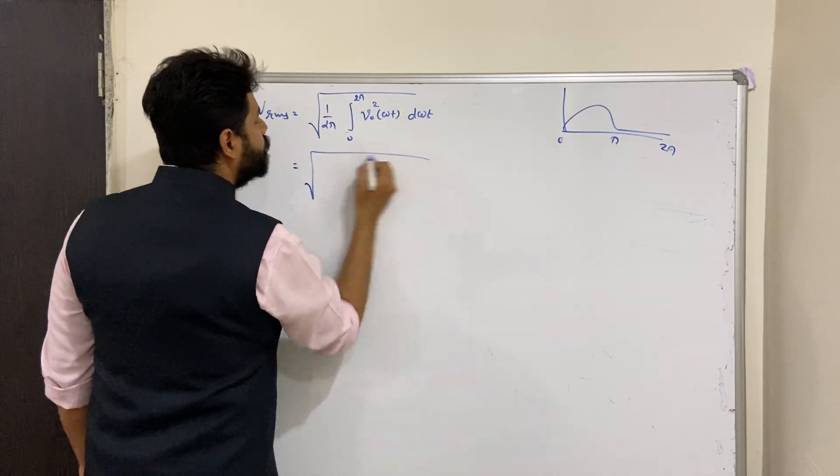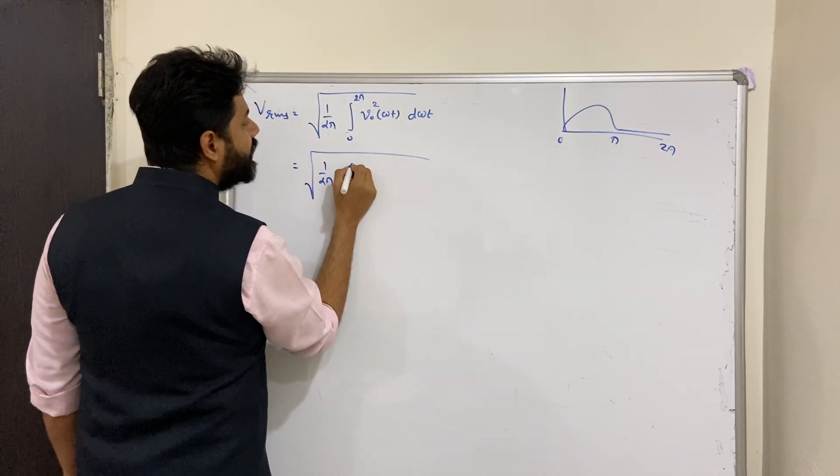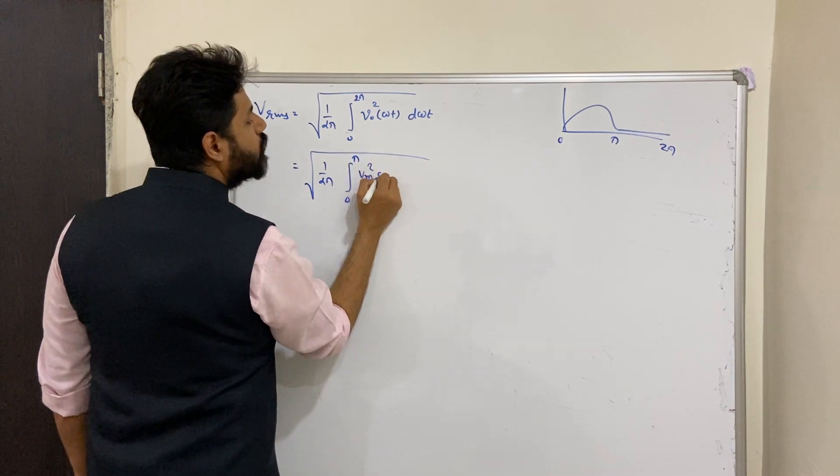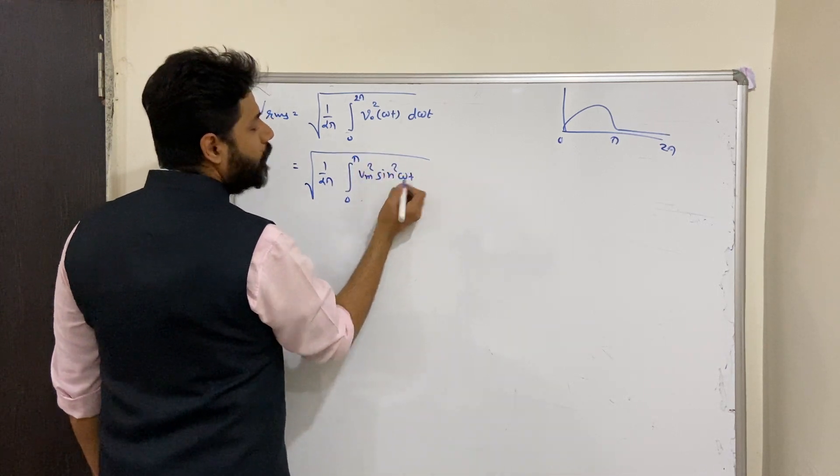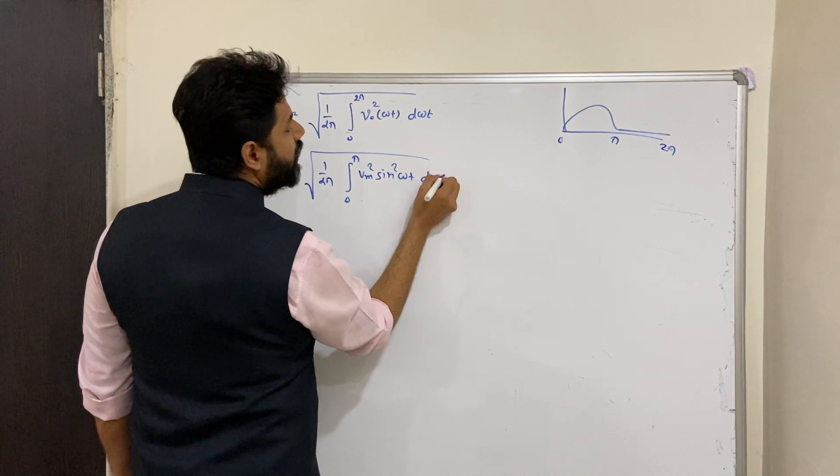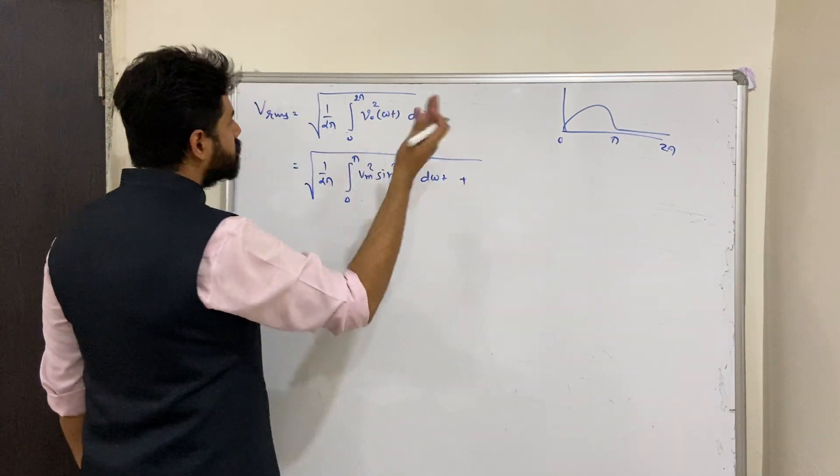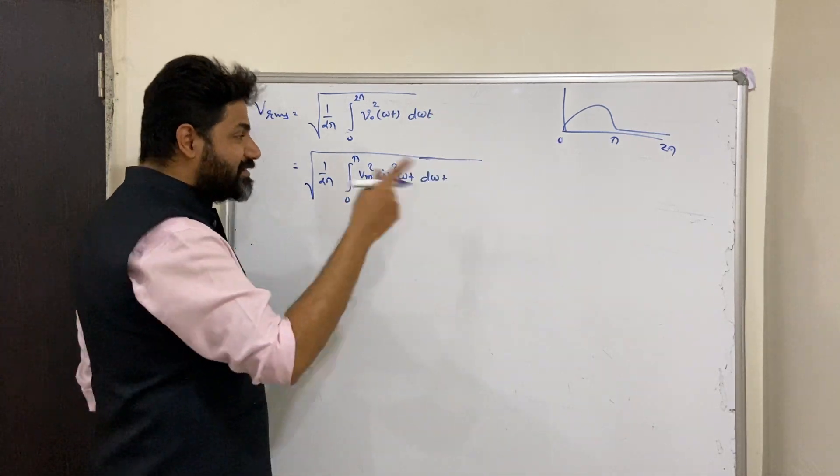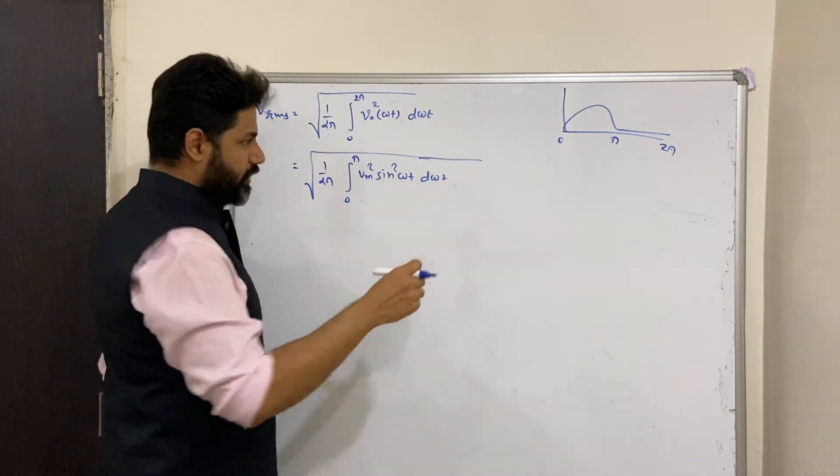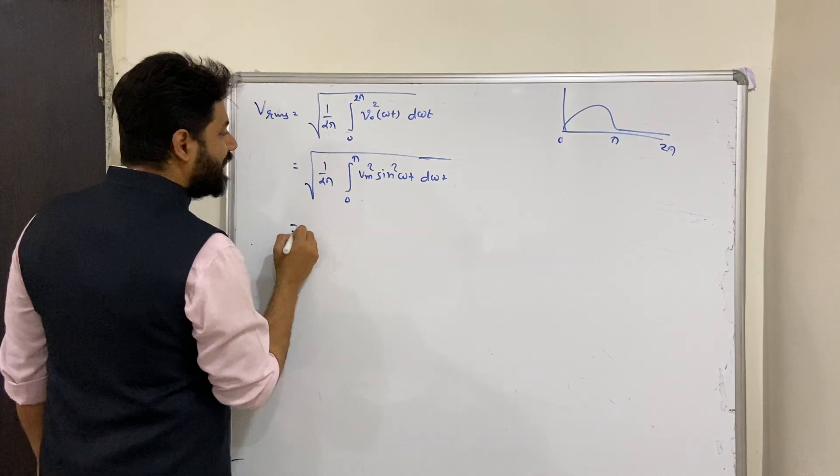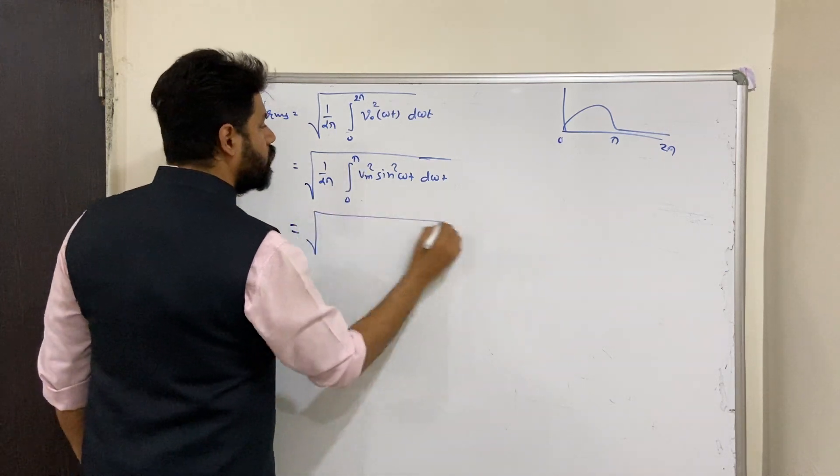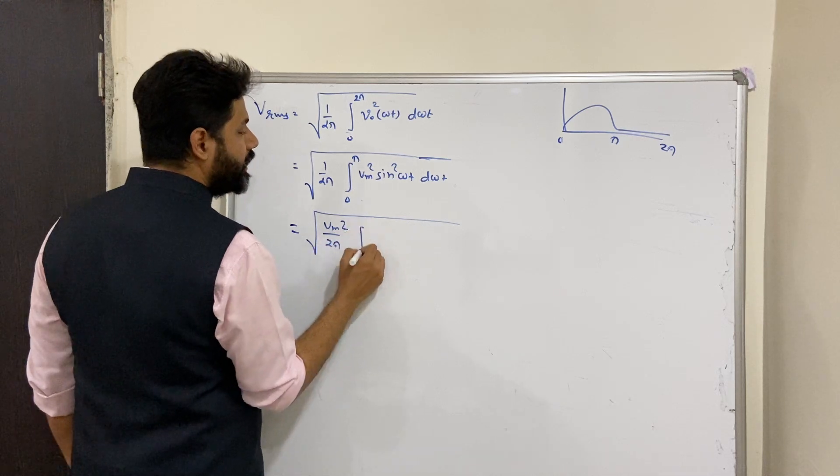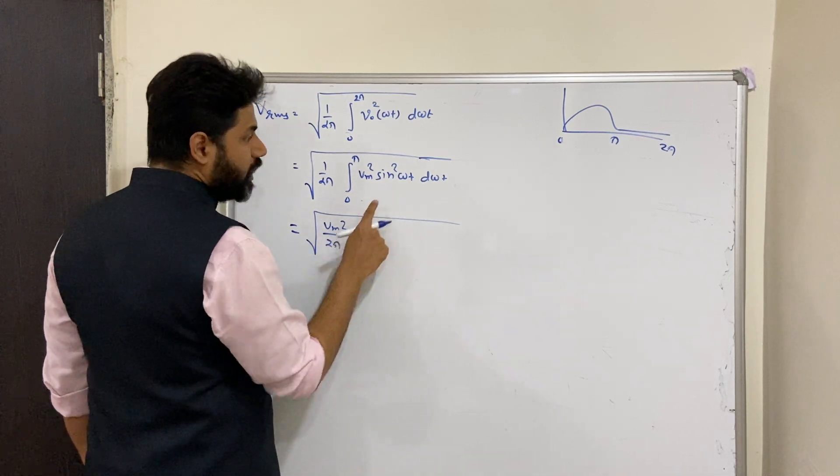So we have got square root of 1 upon 2π, integration 0 to π. It is Vm square sine square omega t d omega t, plus π to 2π, it is zero. Vm square will come outside: square root of Vm square upon 2π, integration 0 to π.